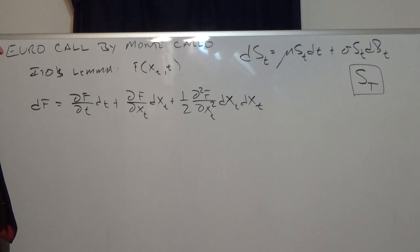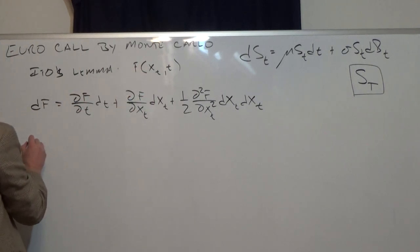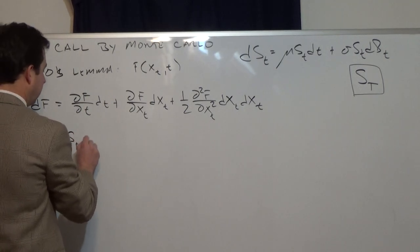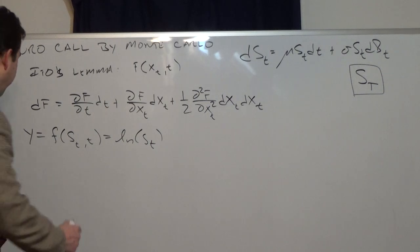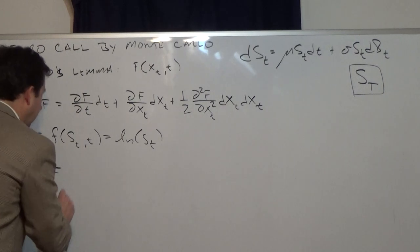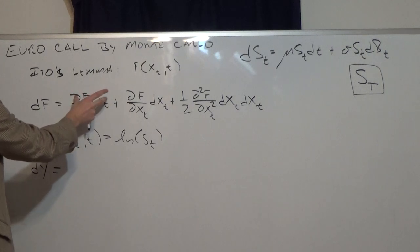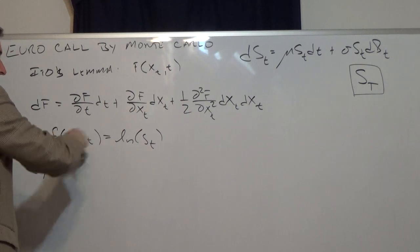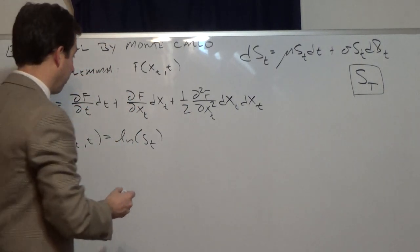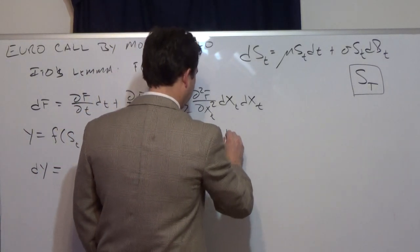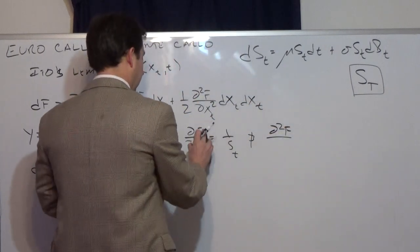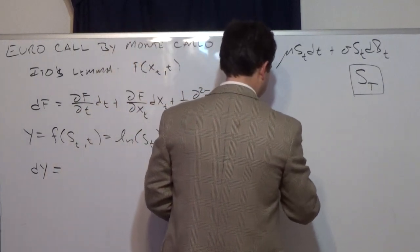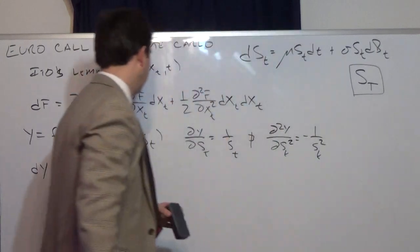We're going to use Ito's lemma to derive the stock price at time T. Let y be a function of S_t and t equal to ln(S_t). Using Ito's lemma to take the derivative of y: since y is only a function of S_t, the partial with respect to t is zero. The partial derivative of y with respect to S_t is one over S_t, and the second partial derivative of y with respect to S_t is negative one over S_t squared.